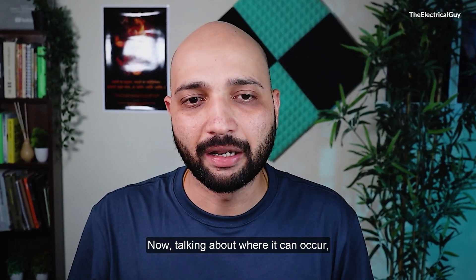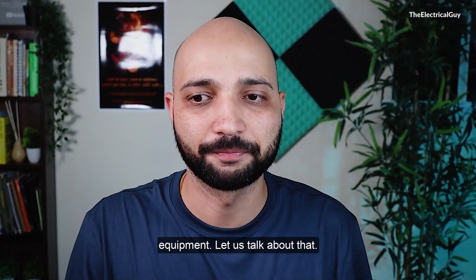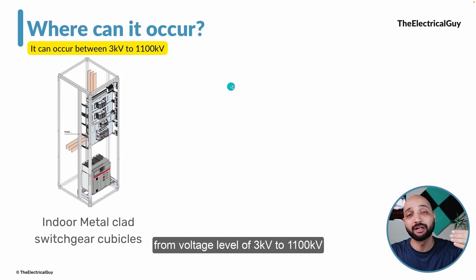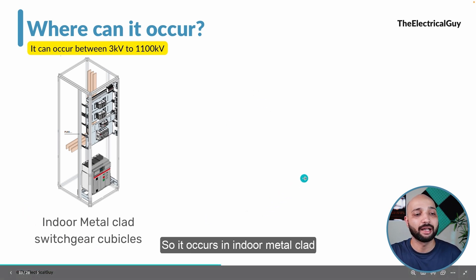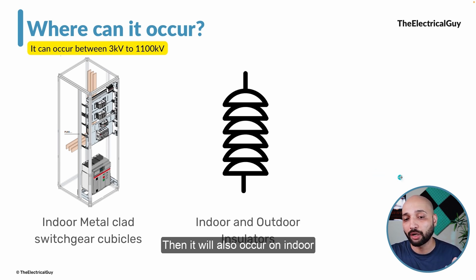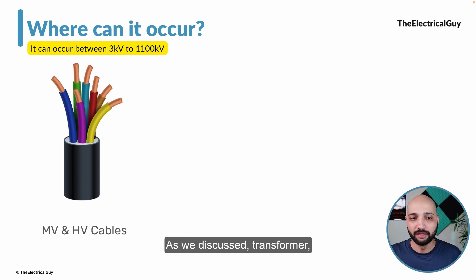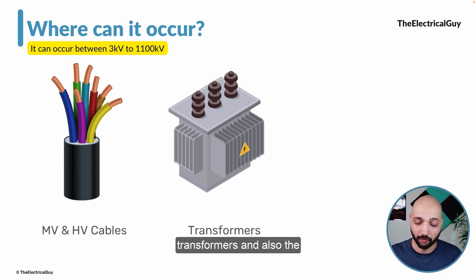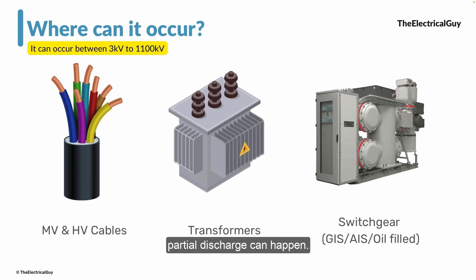Partial discharge is not limited to cables — it can happen in a wide variety of equipment, from voltage levels of 3 kV up to 1100 kV. It occurs in indoor metal-clad switchgear cubicles at both low and medium voltage, indoor and outdoor insulators, different cable boxes including those connected to transformers, medium and high voltage cables, transformers, and various switchgear types — gas insulated, air insulated, and oil-filled switchgear.